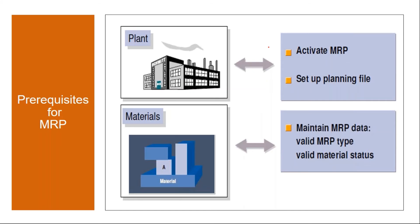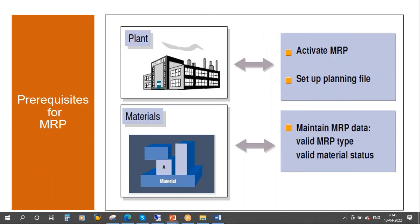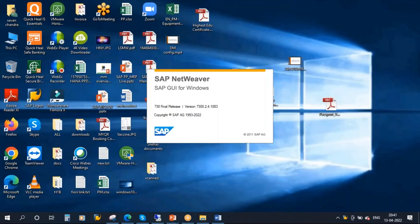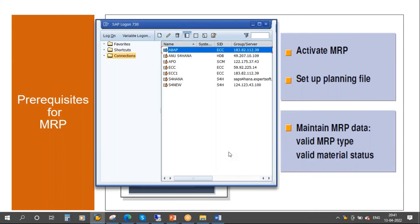Now the steps we discussed are in ECC. In S4 HANA, they have removed this activation of MRP. The moment a plant is created, by default it is activated for MRP. No need to activate MRP separately. Let me show you this — I will go to the S4 HANA system.